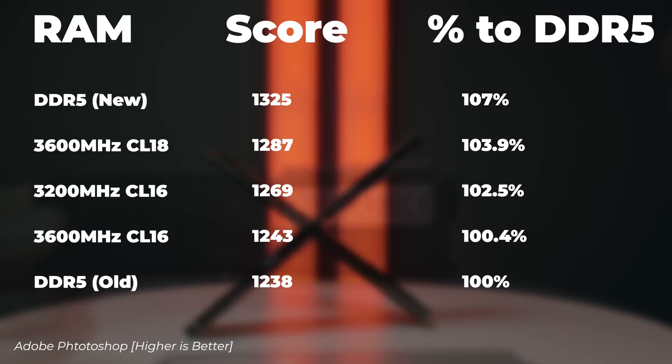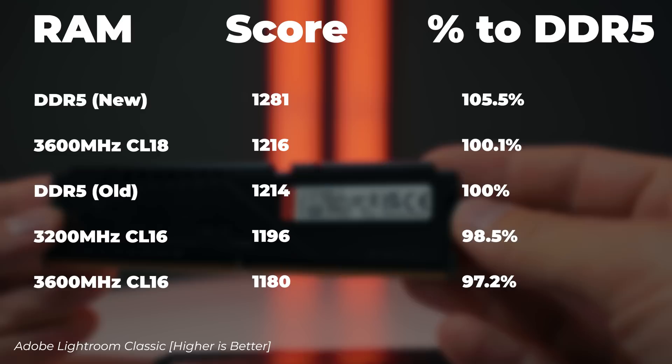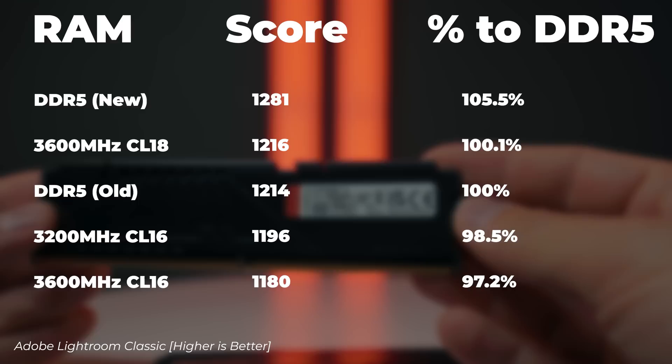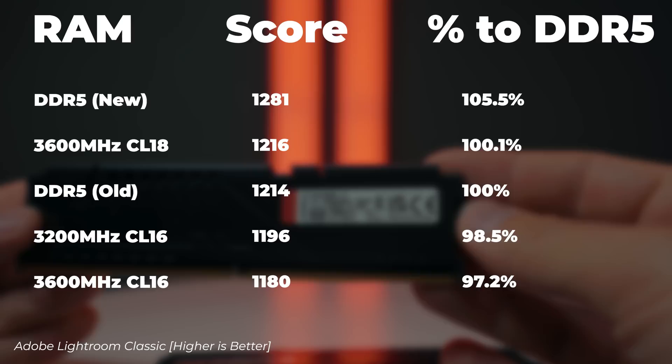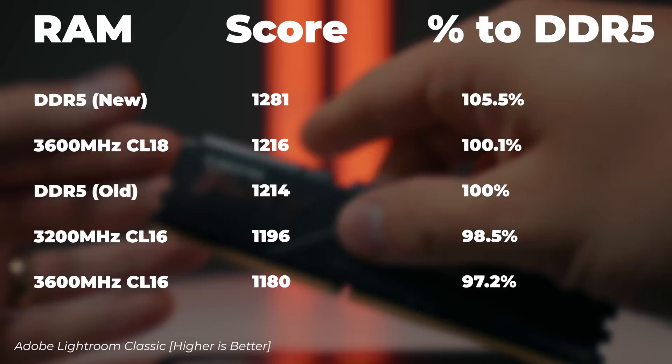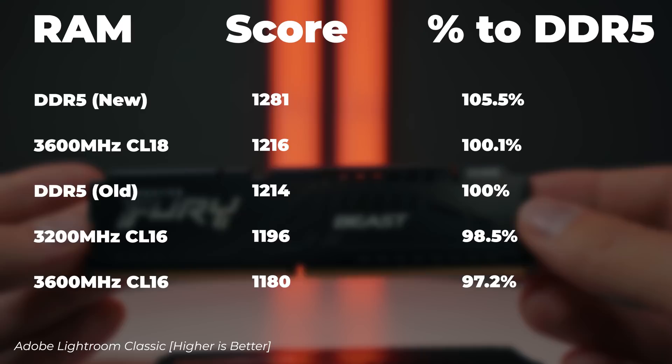In Lightroom Classic, results differ somewhat. The latest DDR5 benchmarks are 5.5% faster than the early DDR5 version. The 3600MHz CL18 is 0.1% faster than the early DDR5 baseline; 3200MHz CL16 is 1.5% slower; and 3600MHz CL16 is 2.8% slower.